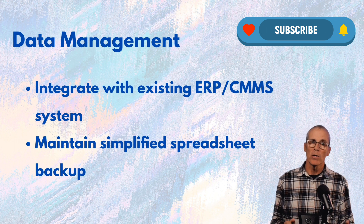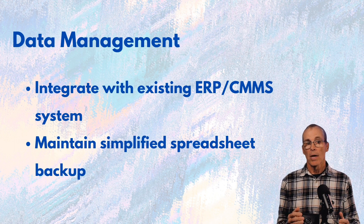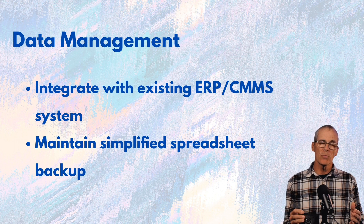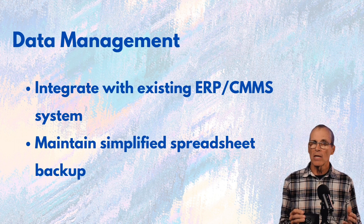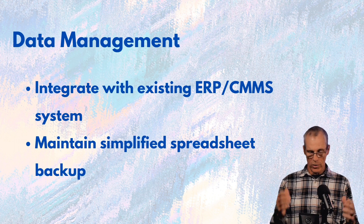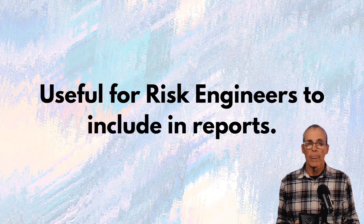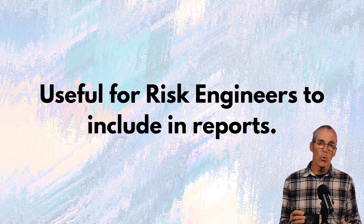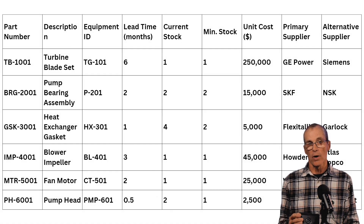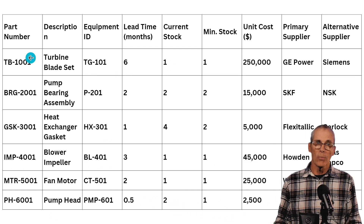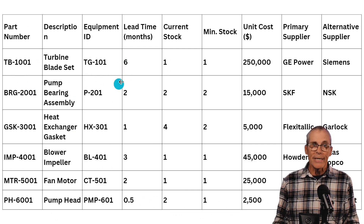For data management, we're going to integrate this with our Computerized Maintenance Management System, or CMMS. We'll also keep a simplified spreadsheet for meetings with insurance companies or situations where we can't pull up the CMMS. That type of report is going to be useful when risk engineers from the insurance companies come in. It will include the part number, description, and equipment ID.